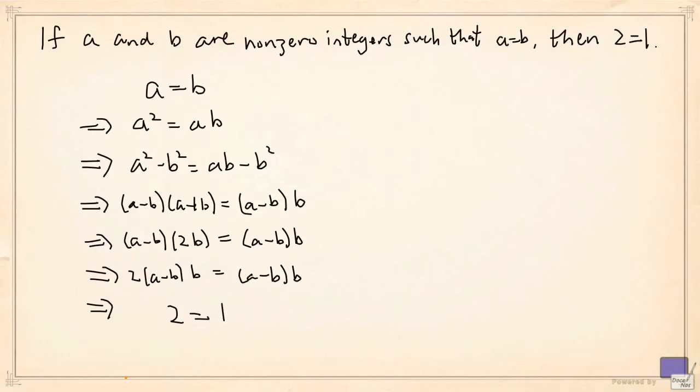This is a proof of the statement that if a and b are non-zero integers such that a equals b, then 2 equals 1.